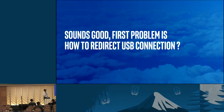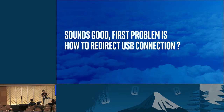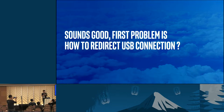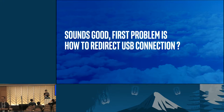The first problem is how to redirect a USB connection. We have moved all the test hosts into our OpenStack cloud and consolidated all the USB cables into a USB cable appliance. So how can the test cases in the cloud still be able to use those USB devices? Obviously, the USB appliance should redirect those USB devices over the network.